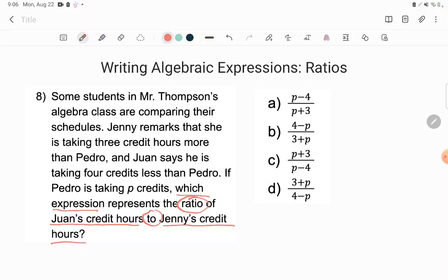They're asking me to write an expression. Obviously they're algebraic expressions. See the letters in here, those variables. And that expression is supposed to represent something. What is it supposed to represent? It's supposed to represent the ratio. Well guys, one nice way to translate ratio is just fraction. You can write a ratio as a fraction. So they're asking me to write a fraction. And now what fraction do they want me to write? They want me to write the ratio of Juan's credit hours to Jenny's credit hours. So remember guys, order matters with ratios, with fractions.